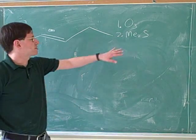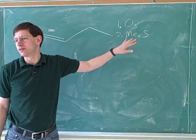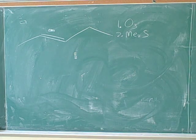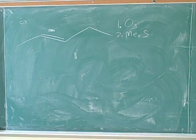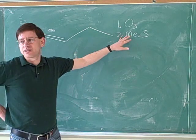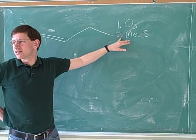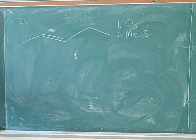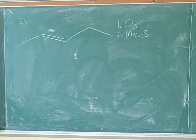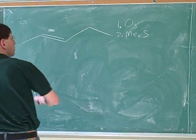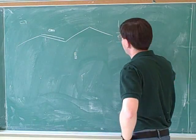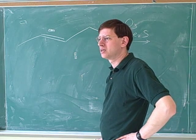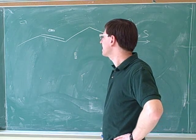DMS stands for dimethyl sulfide. You can also use zinc in acetic acid for the second step. So the second step could be either DMS, dimethyl sulfide, or zinc in acetic acid is another common reagent there. Anyone know what would happen here?